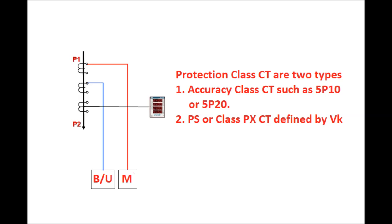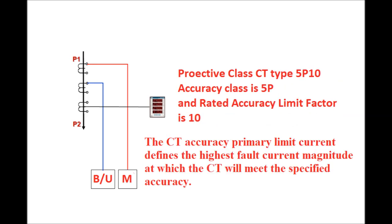For a 5P20 class CT, if 20 times the rated current flows in the primary side, then the maximum error will be 5%. Another type of CT is the Class PX CT, which is defined by the knee point voltage of the CT. In the case of protection class CT such as 5P10, the 5 is the accuracy class and 10 is the accuracy limit factor — that is, the maximum accuracy primary limit current under rated burden on the secondary side of the CT.